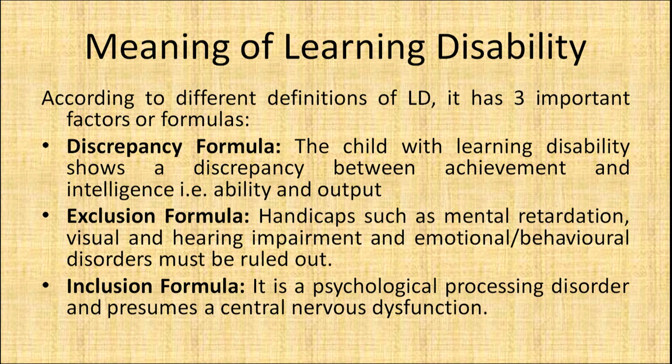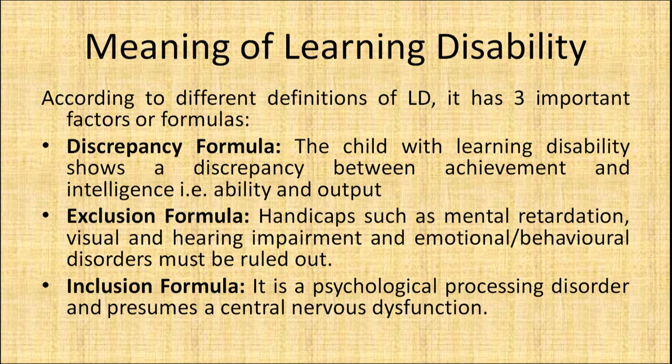The exclusion formula refers to those who are excluded from being labelled as learning disabled. Handicaps such as mental retardation, visual and hearing impairment, and emotional or behavioural disorders must be ruled out. For example, if a child is unable to cope with studies because of a hearing problem and is not using a hearing aid, he will not be labelled as learning disabled. The inclusion formula indicates it is a psychological processing disorder and presumes a central nervous system dysfunctioning — in simple terms, a cross-wiring.